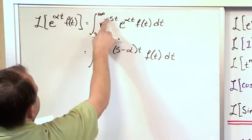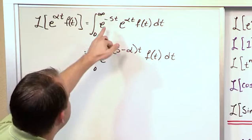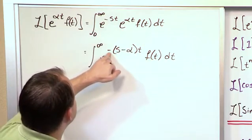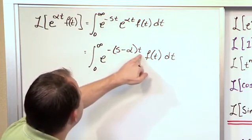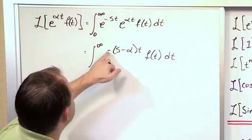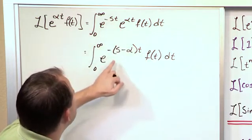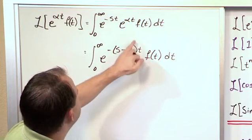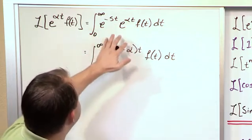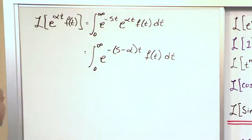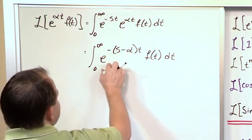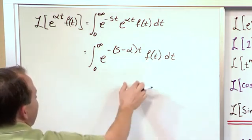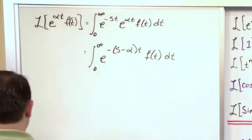Since these have the same base, we can just add the exponents. And when we add the exponents, I'm just going to factor out this negative sign and factor out the t. So if you multiply everything through, you get negative s t, which is that, plus alpha t, which is that. So all we've done is basically done do some factoring here. We have one term with an exponential in time and we have a function of time here as well.